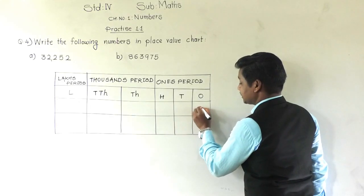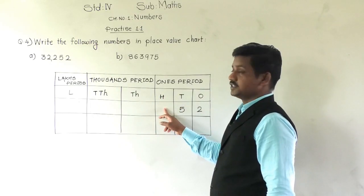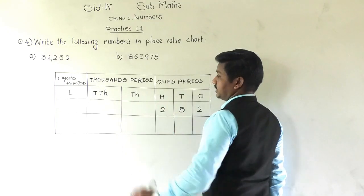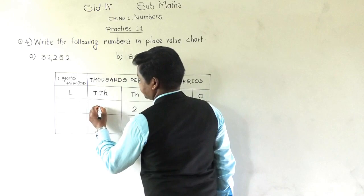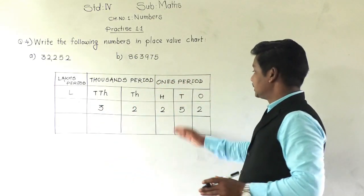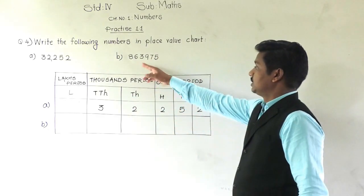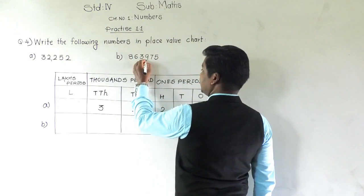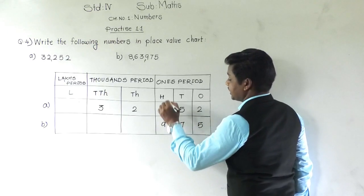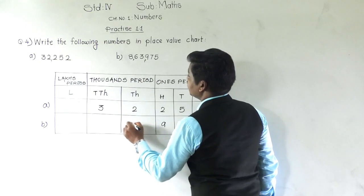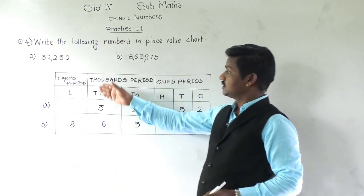For example a (32,252): at ones place is 2, tens place is 5, hundreds place is 2, thousands place is 2, and ten thousands place is 3. For example b (8,63,975): ones is 5, tens is 7, hundreds is 9, thousands is 3, ten thousands is 6, and lakhs is 8.